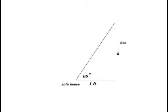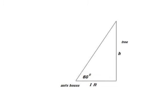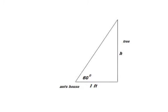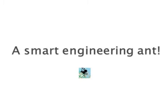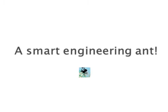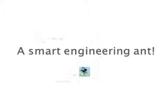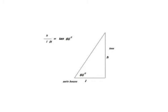That means if you use this triangle to represent the problem, the height of the tree is the length opposite to the angle, and the base of the triangle that represents the distance from house to tree is the adjacent side.